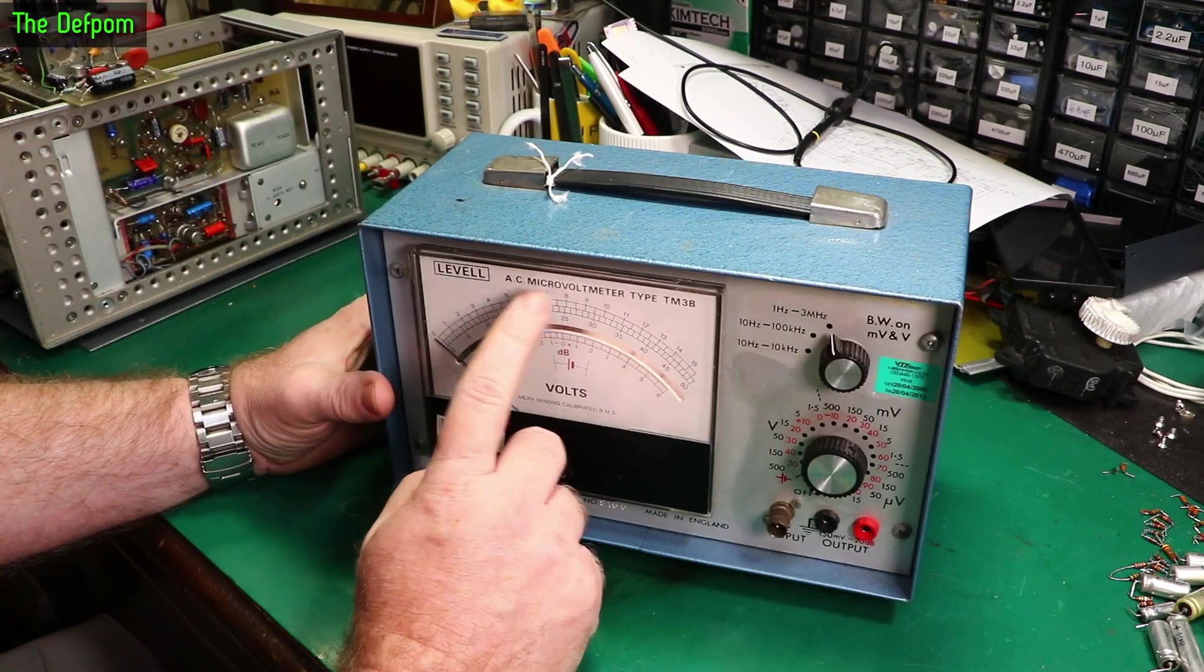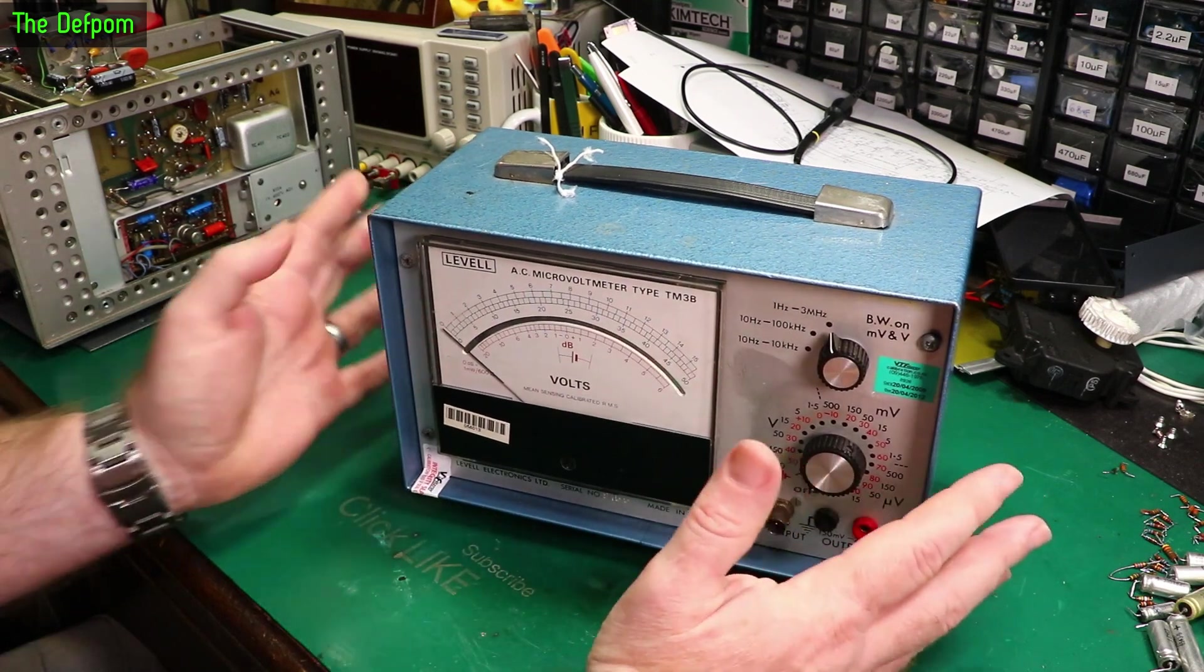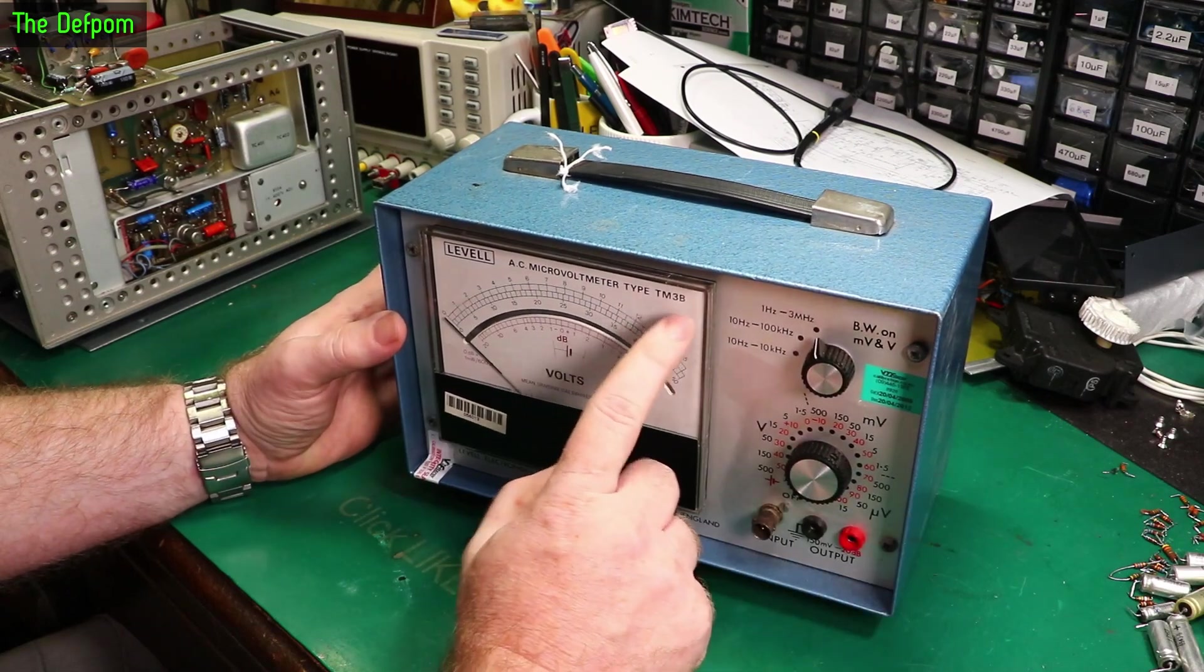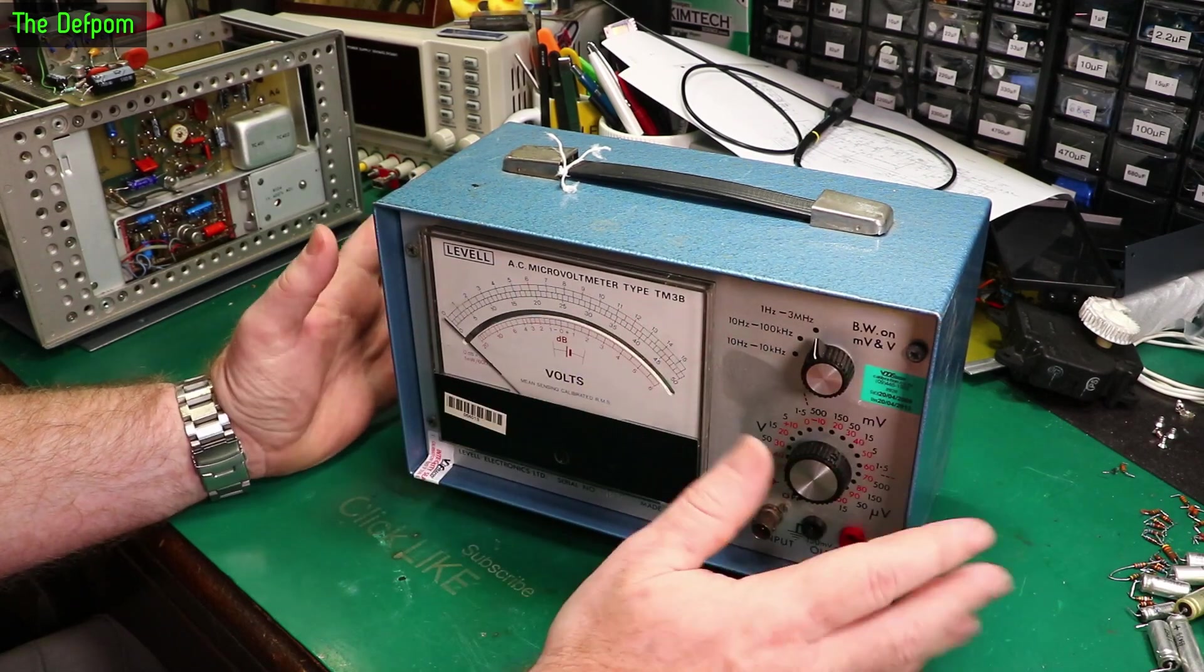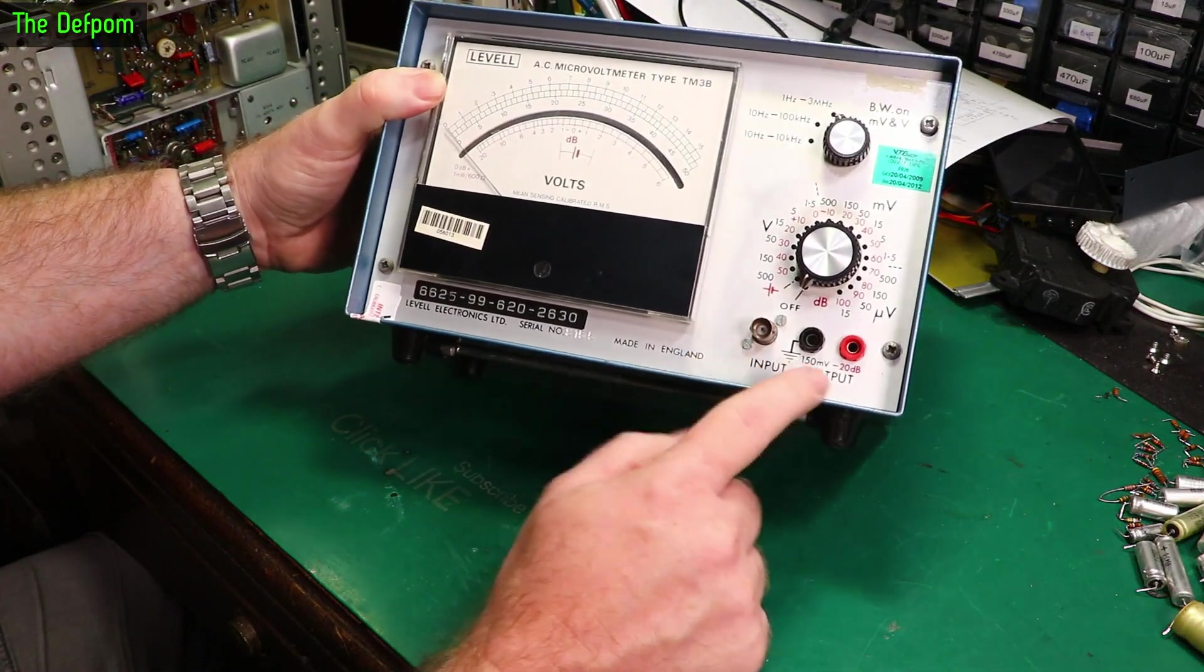It's a Levelle AC microvolt meter TM3B. I do have a version of a circuit diagram for this, for the three series. Hopefully it's basically the same. It's got a BNC input just here and an output as well.